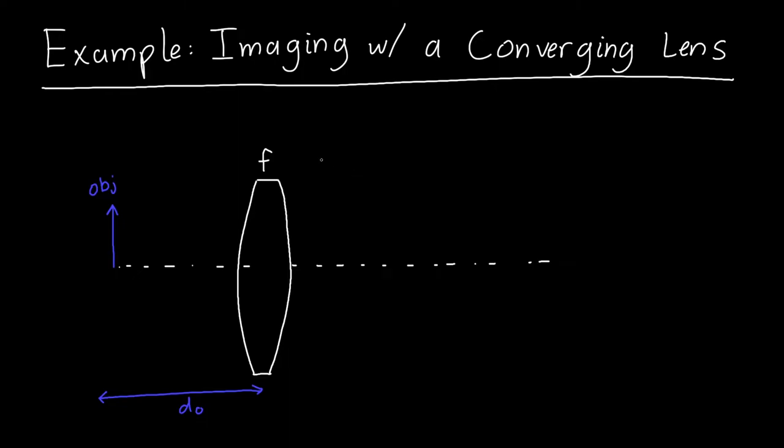In this video, we're going to do an example of imaging with a converging lens. We're going to say that there's an object which is a distance do equal to 40 centimeters away from the lens. And we're going to say that that lens is a converging lens which has a focal length of 20 centimeters.